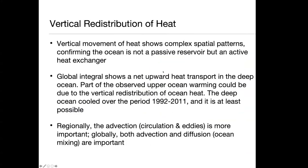Summary of vertical heat redistribution: The vertical movement of heat shows complex spatial patterns, confirming the ocean is not a passive reservoir but an active heat exchanger. The global integral shows a net upward heat transport in the deep ocean. Part of the observed upper ocean warming could be due to the vertical redistribution of ocean heat. For this particular product and time period, the deep ocean cooled. Considering the long memory of the ocean, it's a possible scenario that needs further investigation. Regionally, advective processes — circulation and eddies — are more important, but globally, both advective and diffusive processes are important for vertical heat transport.